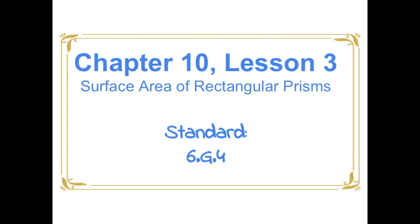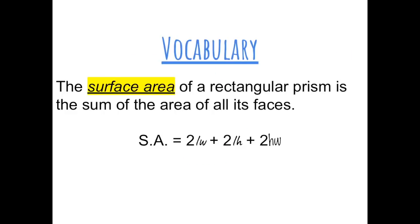Chapter 10, Lesson 3: Surface Area of Rectangular Prisms. The surface area of a rectangular prism is the sum of the area of all of its faces. The formula is: surface area equals 2 times the length times the width, plus 2 times the length times the height, plus 2 times the height times the width.